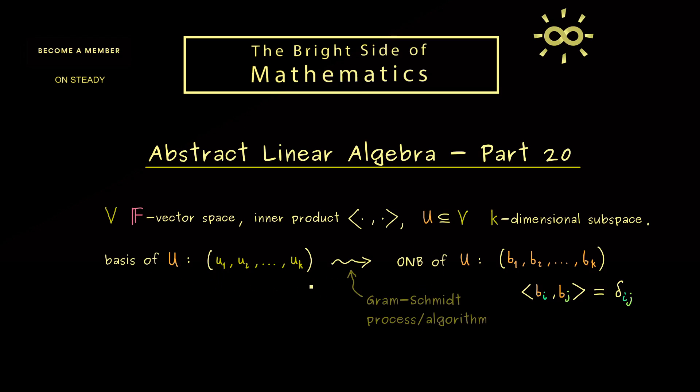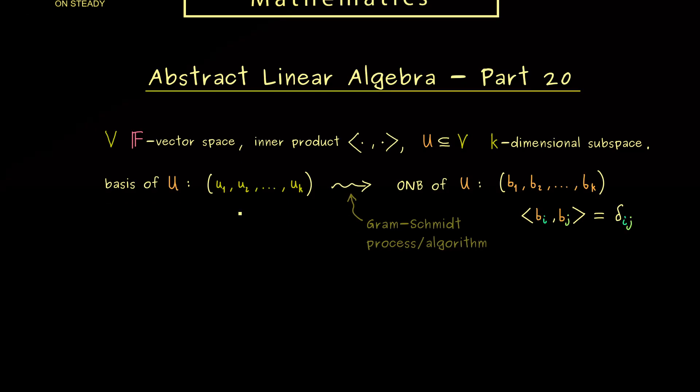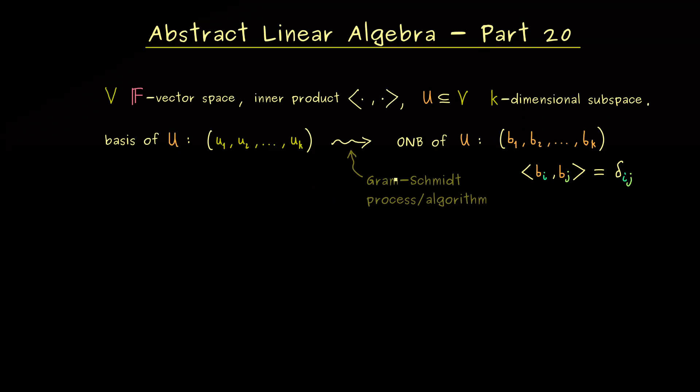This means we have to do two things. First, we have to make the vectors mutually orthogonal, and then we have to normalize them. And indeed we can do that for each vector separately. So we start with the first one.